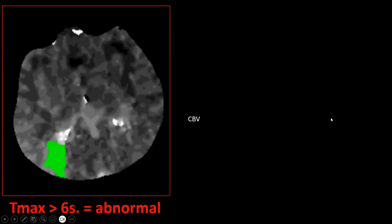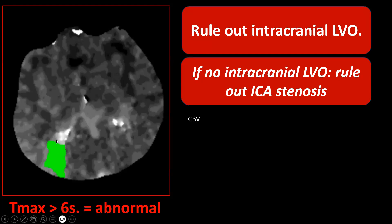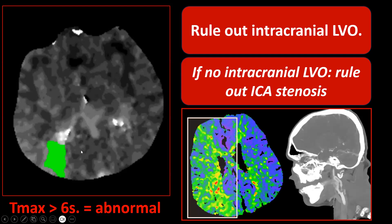If Tmax >6 seconds is abnormal, we have identified tissue that may infarct. We should definitely check CT angiography to see if there is a large vessel occlusion. Considering the small size of a lesion it probably will be a distal occlusion. If a patient doesn't have a large vessel occlusion or even a distal occlusion visible on CT angiography, we should check the cervical arteries to rule out an occlusion or stenosis of the internal carotids. Note that everything I'm describing involves the anterior circulation unless I specify otherwise.